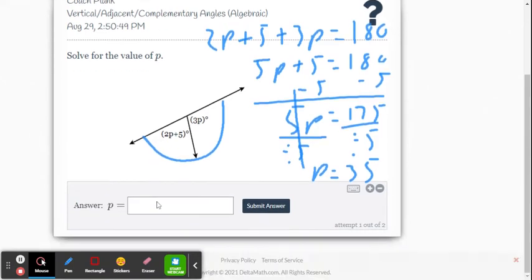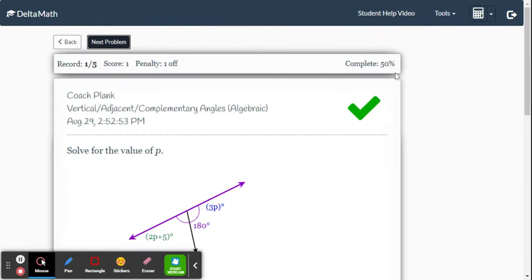Divide by 5, and so we end up getting p equals 35. So then in the Delta Math online system, after we've shown all our work and we've got the answer, all we have to do is type in the number. See how it's p equals already? So all you have to do is type in 35 and submit to see if you're correct. And we've got the green check mark, so we're good on this one.